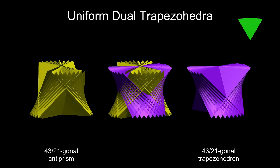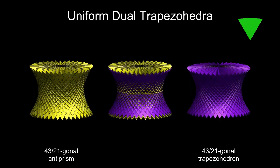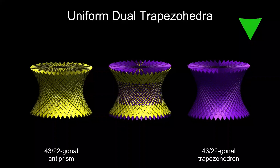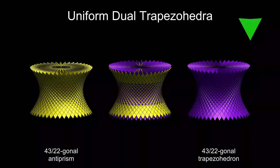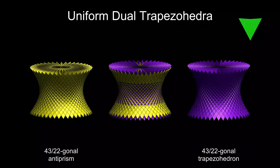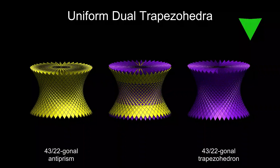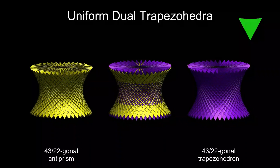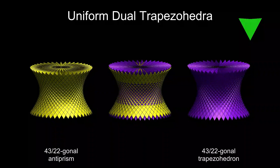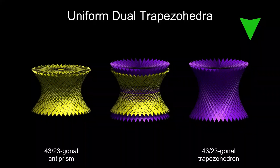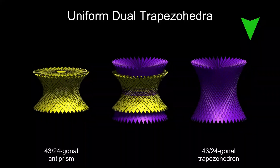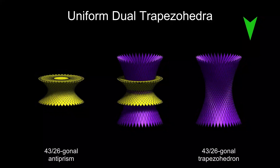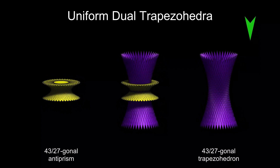Restoring all faces and resuming our journey through the densities: as the density edges up to 22, just over half of 43, we now have a crossed antiprism and crossed trapezohedron, but they still look remarkably similar. The face shape has changed from a convex kite to a concave dart, but is still close to a triangle. As the density goes up further, the top and bottom of the trapezohedron become concave, until at 28, the maximum possible density, the trapezohedron is very long and spiky.